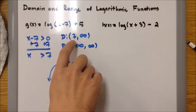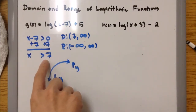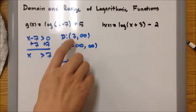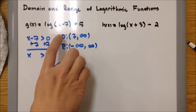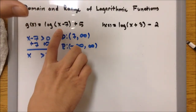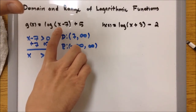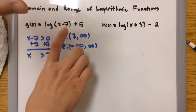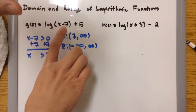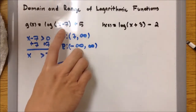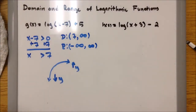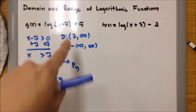It's a parenthesis on the 7 because x is greater than 7, not equal to 7. We cannot use 7 because if we plug 7 into x minus 7, that gives us 7 minus 7, which equals 0. Therefore we'd have log of 0, which is undefined — it will say invalid input or error. That's why we use parenthesis on the 7.